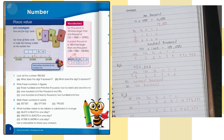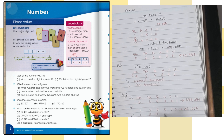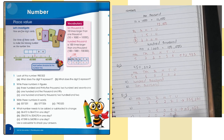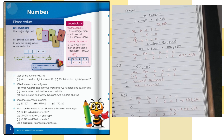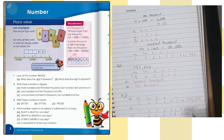Part C: one hundred and twenty thousand, two hundred and two. So one hundred goes in hundred thousands, twenty in ten thousands, zero in thousands, two hundred in hundreds, no tens mentioned (zero), and two in units. The short figure is 120,202.